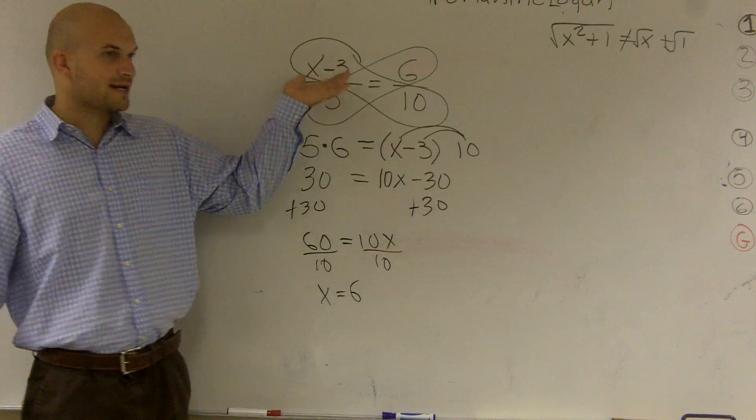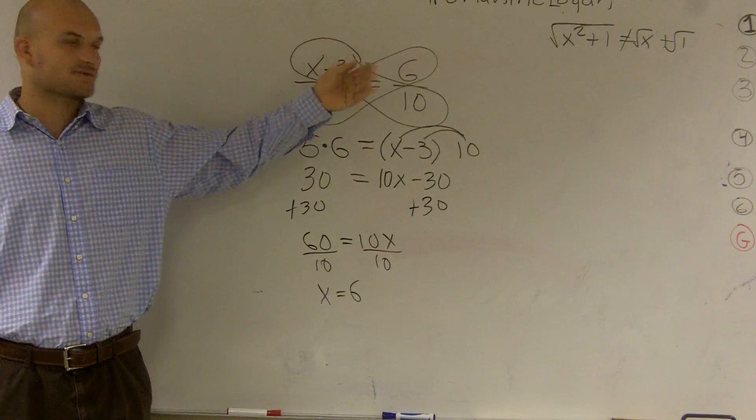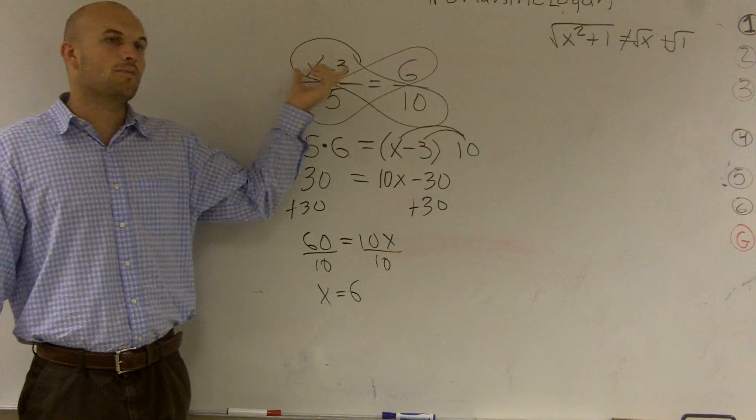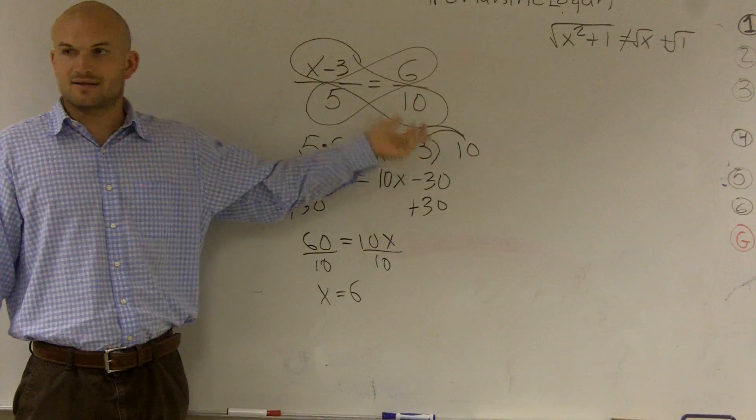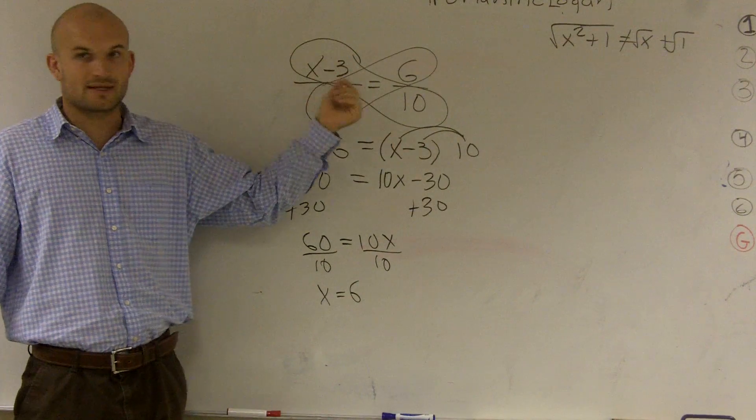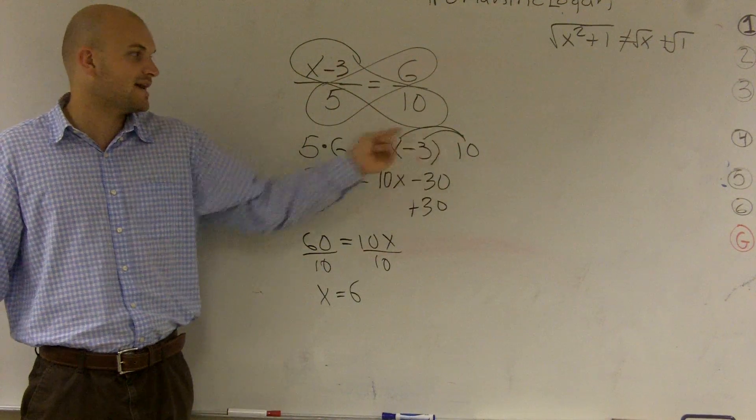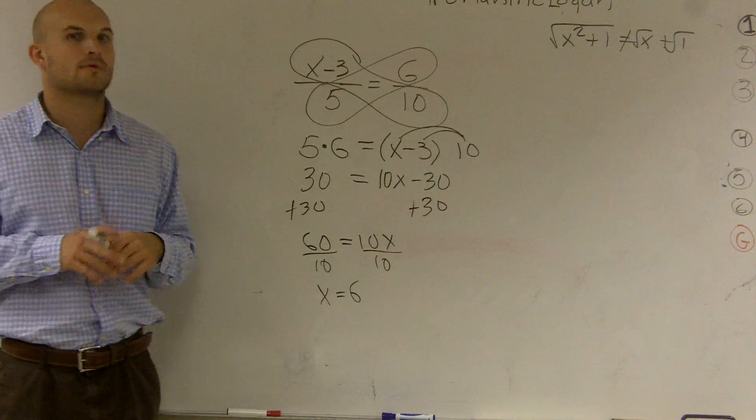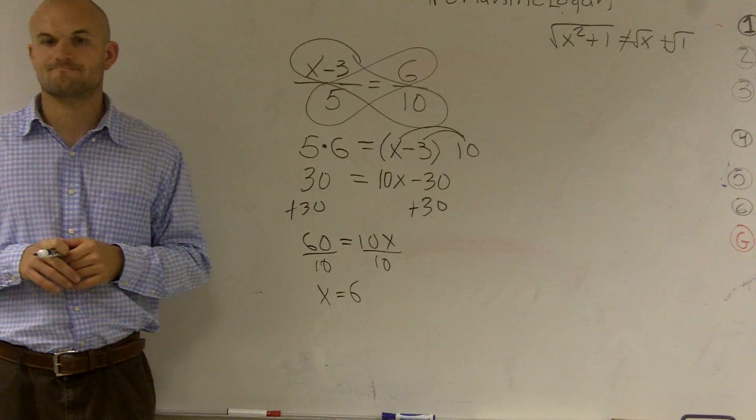So just remember, when you're multiplying an expression, you know x minus 3, that whole expression is being multiplied by 10. A lot of students just multiply the 10 times the 3, that's where they make their mistake. Multiply that 10 times both terms. All right? That's it.